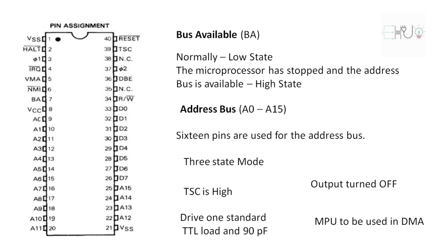Pin 7 is BA, which stands for bus available. Normally it is in a low state, which means the microprocessor is working. When BA goes high, it indicates the microprocessor has stopped and the address bus is now available.